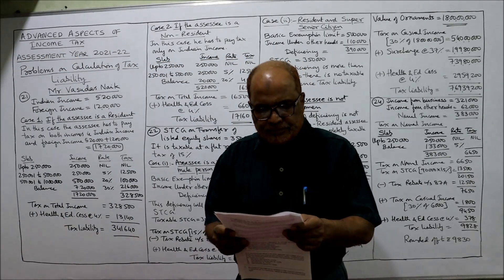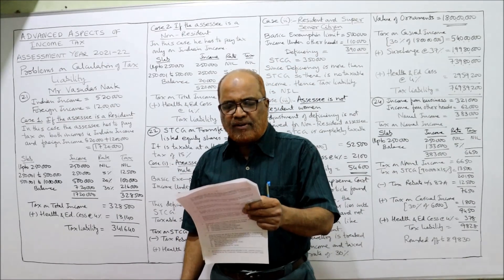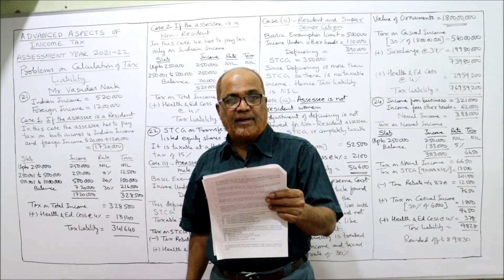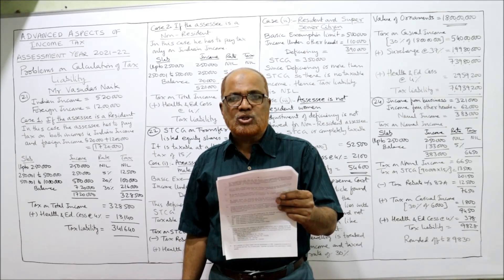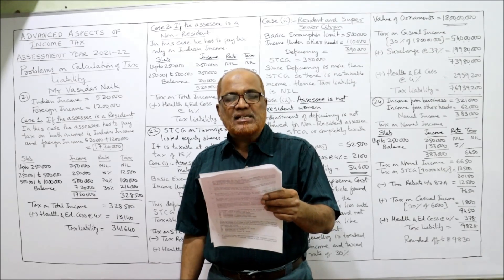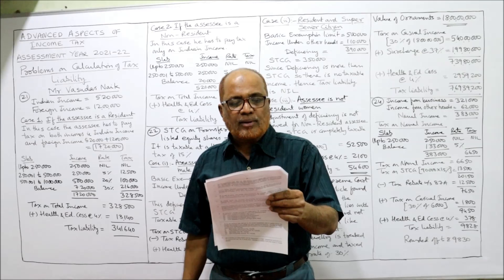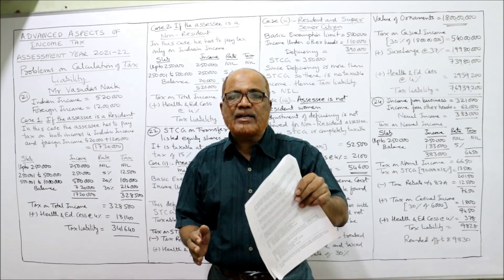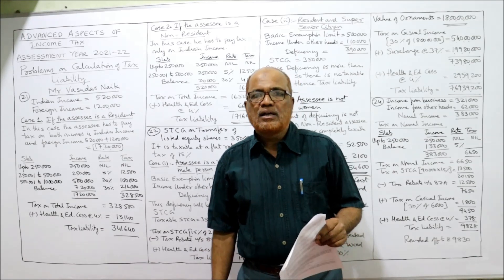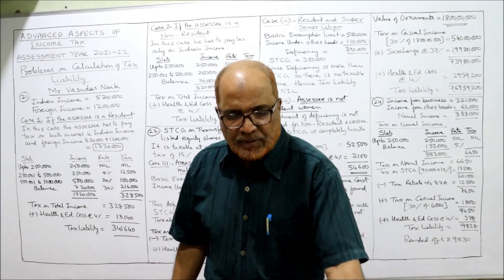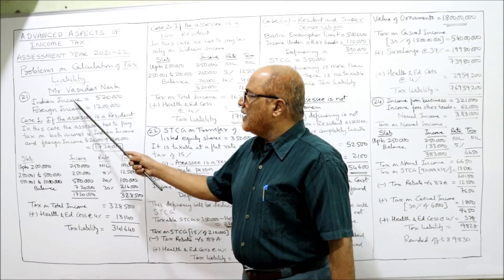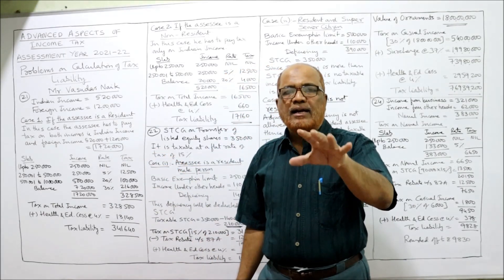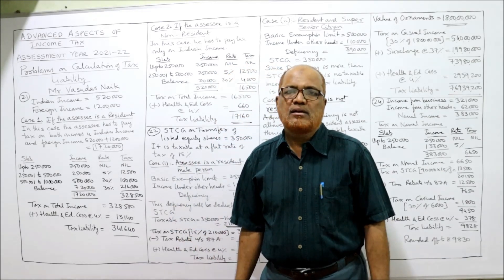Let's see the 21st problem. For the previous year 2021, Mr. Vasudas's income in India is ₹5,20,000 and in a foreign country it is ₹12,00,000. Calculate the tax liability in the following situations: first, if his residential status is resident, and second, if the residential status is non-resident. For the current assessment year 2021-22, we need to find the tax liability in each situation.